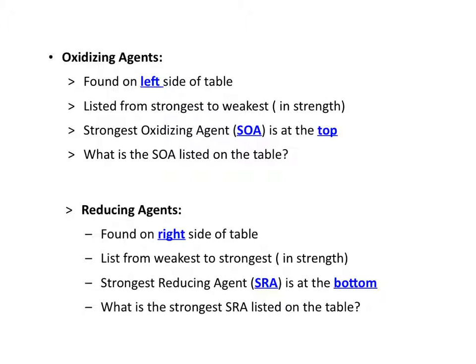An oxidizing agent is found on the left side of the table, listed from strongest to weakest. The strongest oxidizing agent, or SOA, is at the very top on the left-hand side — that is F2 gas. Reducing agents are found on the right side of the table, listed from weakest to strongest, so the weakest reducing agent is at the top. The strongest reducing agent, at the bottom right, is lithium solid.